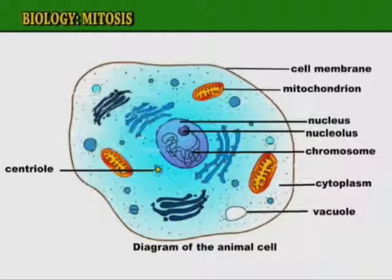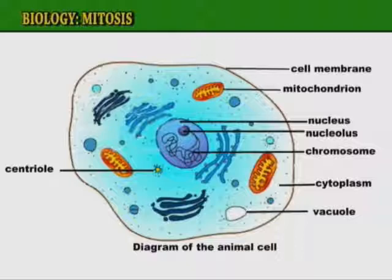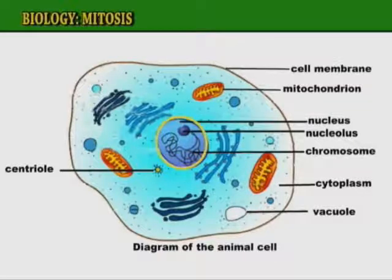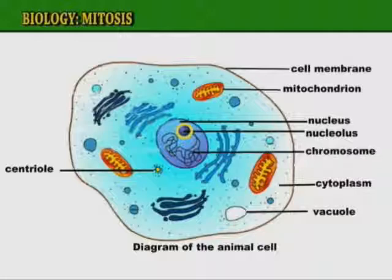Before we go on to describe the process of mitosis, you should already know what a cell is and the various parts of a cell. The parts of the cell that are especially important to this section are the nucleus, the nucleolus, the chromosomes, and the centrioles.